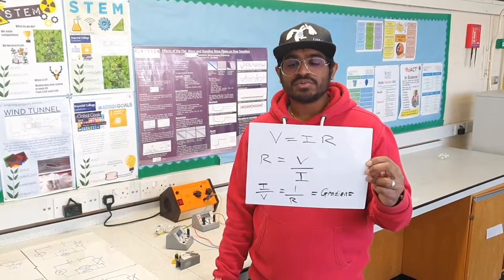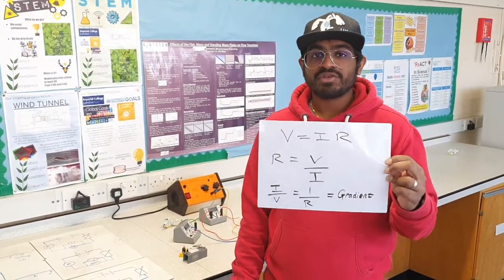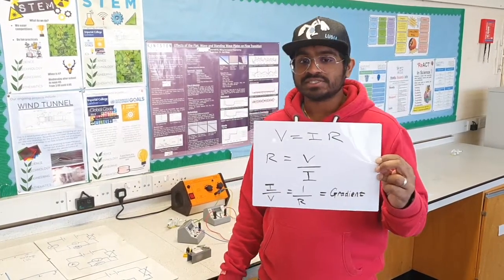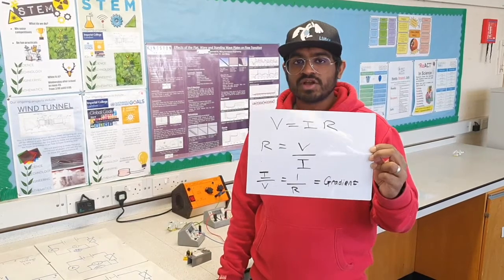You know Ohm's law, which states that potential difference is directly proportional to current. If we rearrange this equation to make resistance the subject, we get resistance equals potential difference or voltage over current.